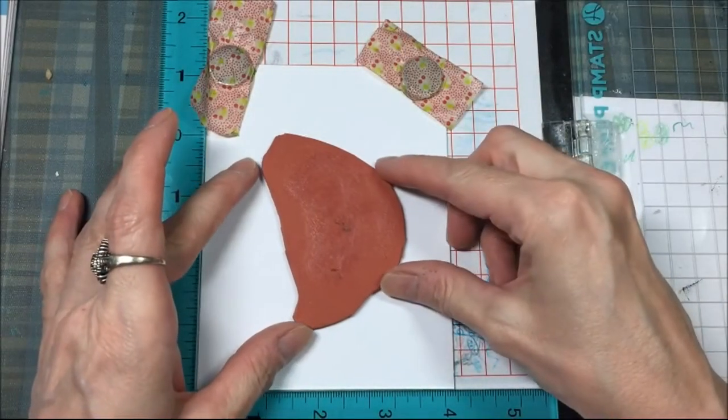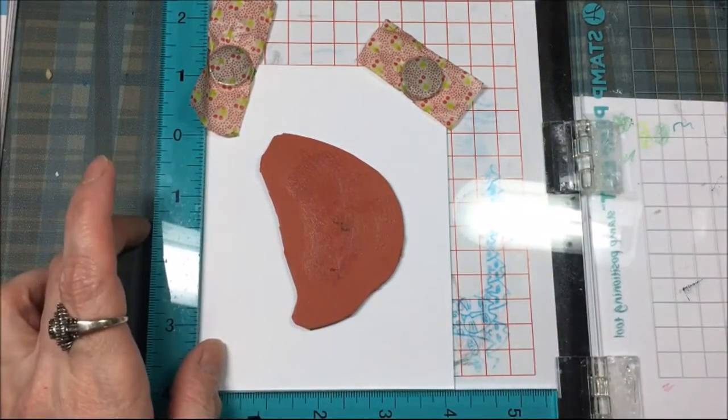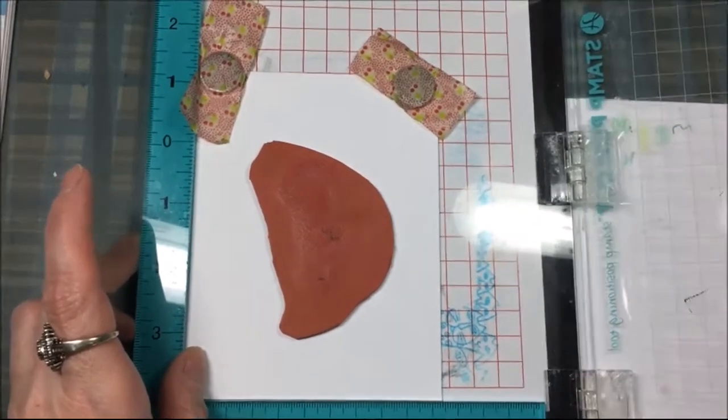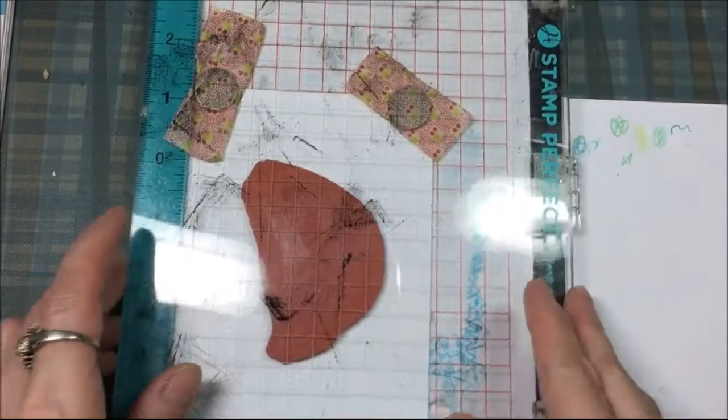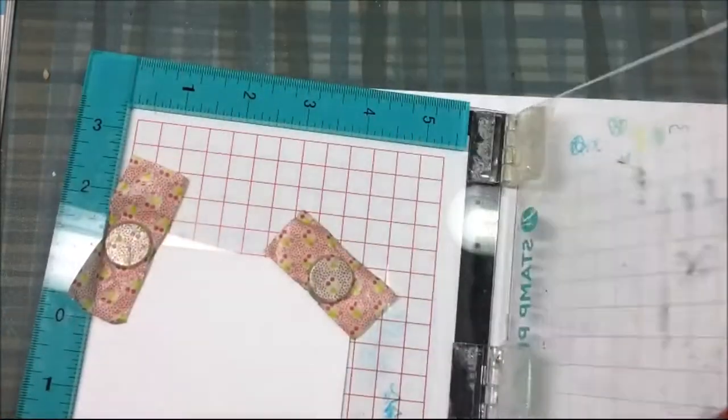I'm rubbing it onto the back of that stamp because I don't mount my stamps when they're unmounted. I like to leave them the thin rubber just because it's easier to store that way.